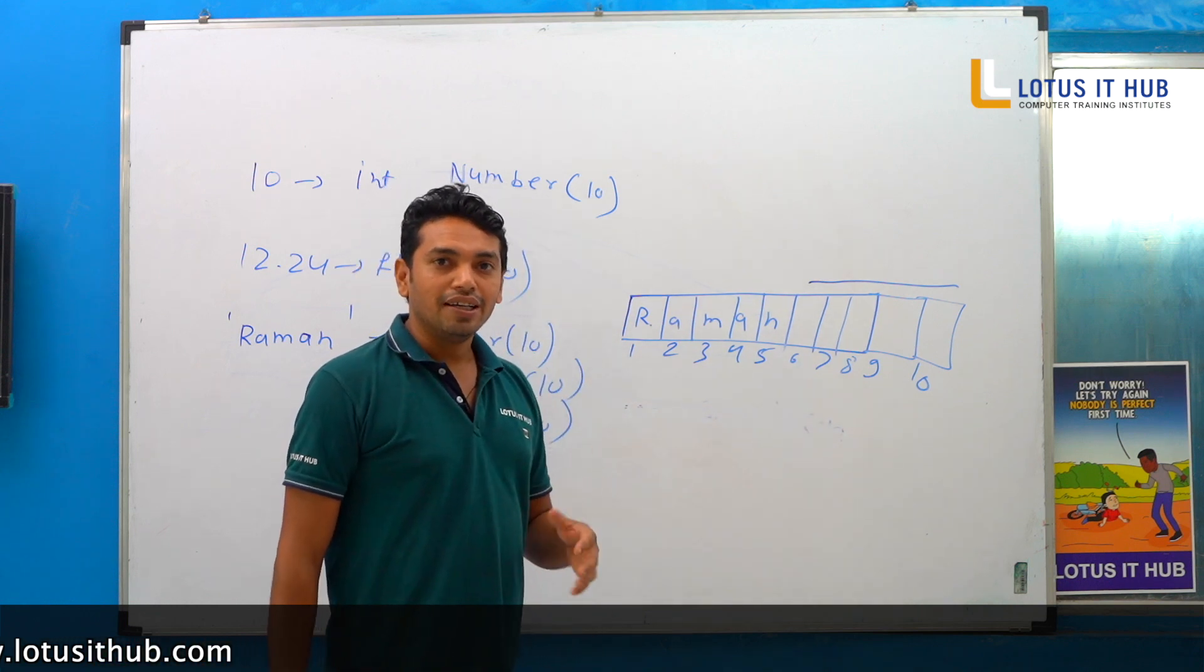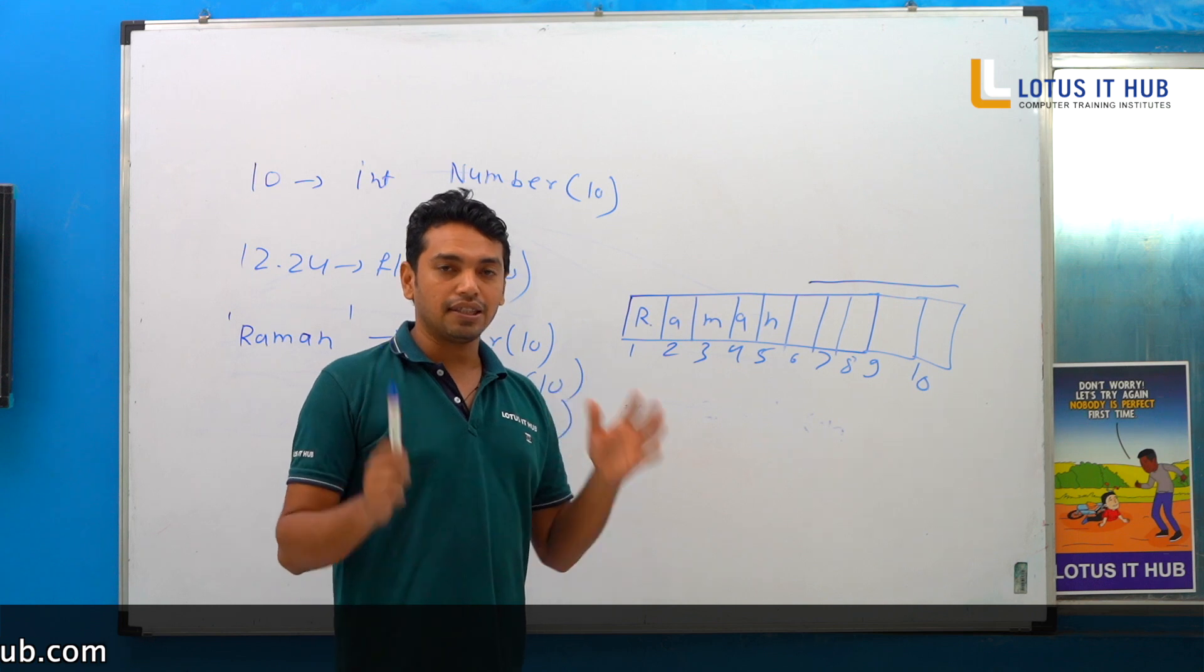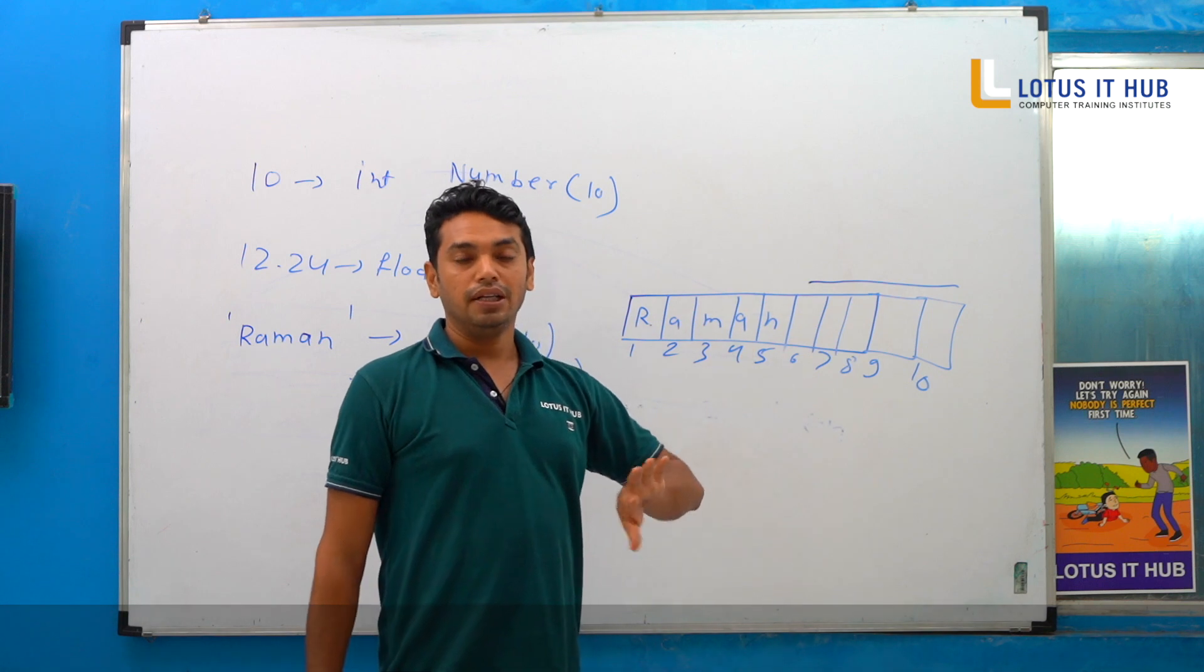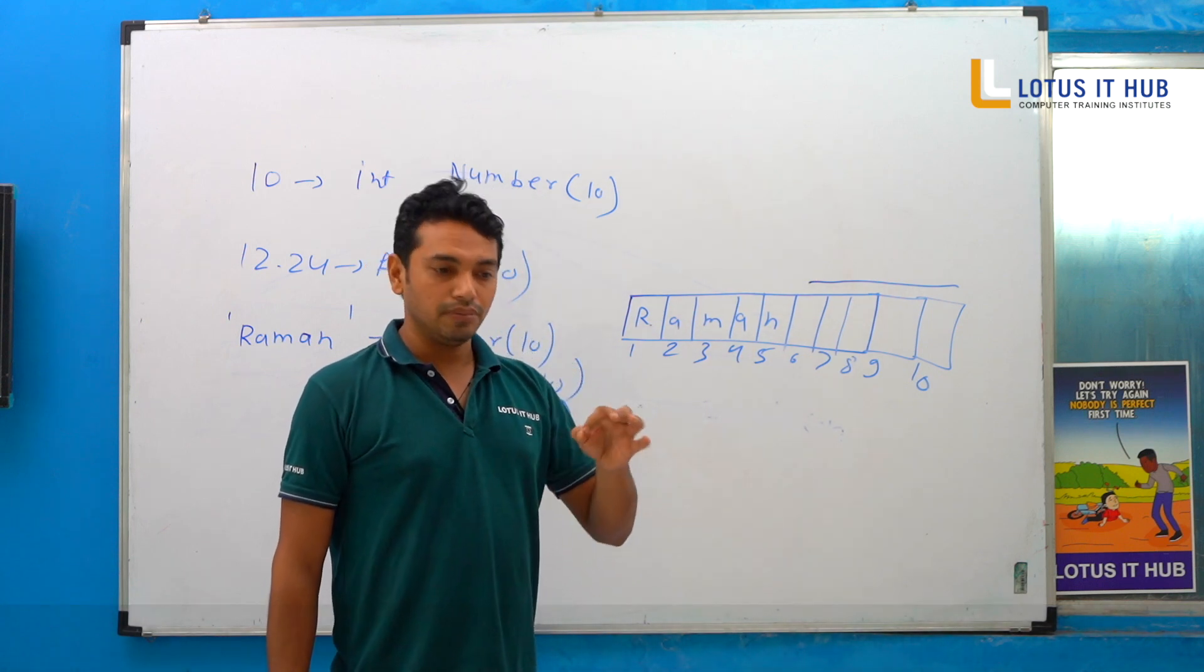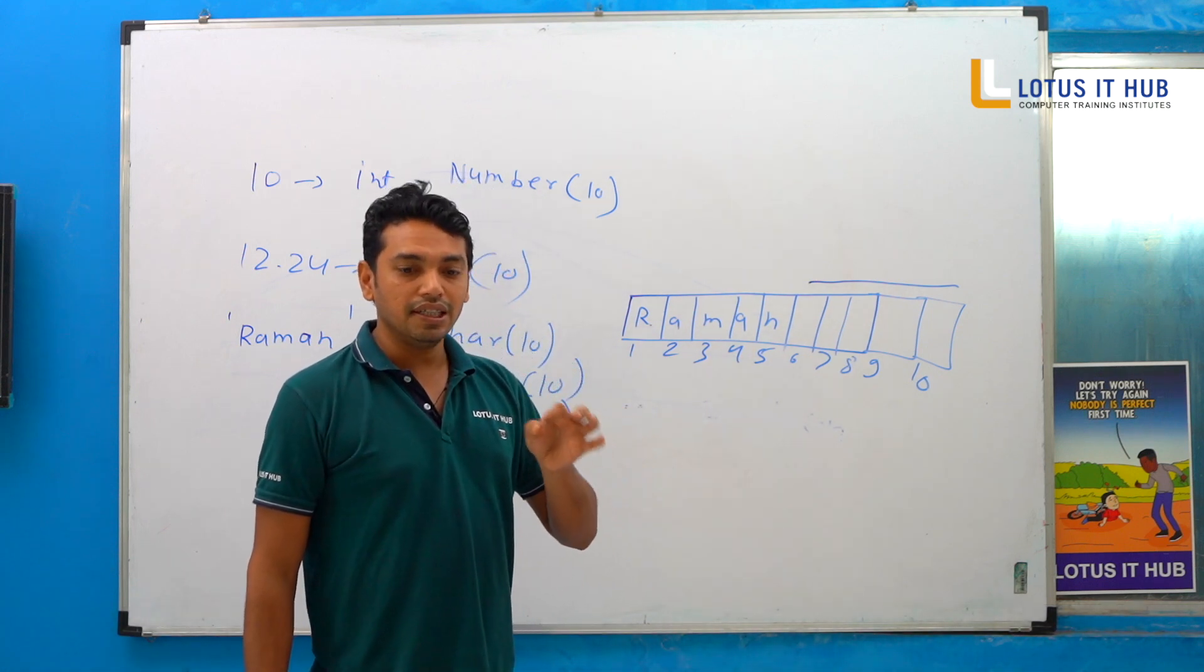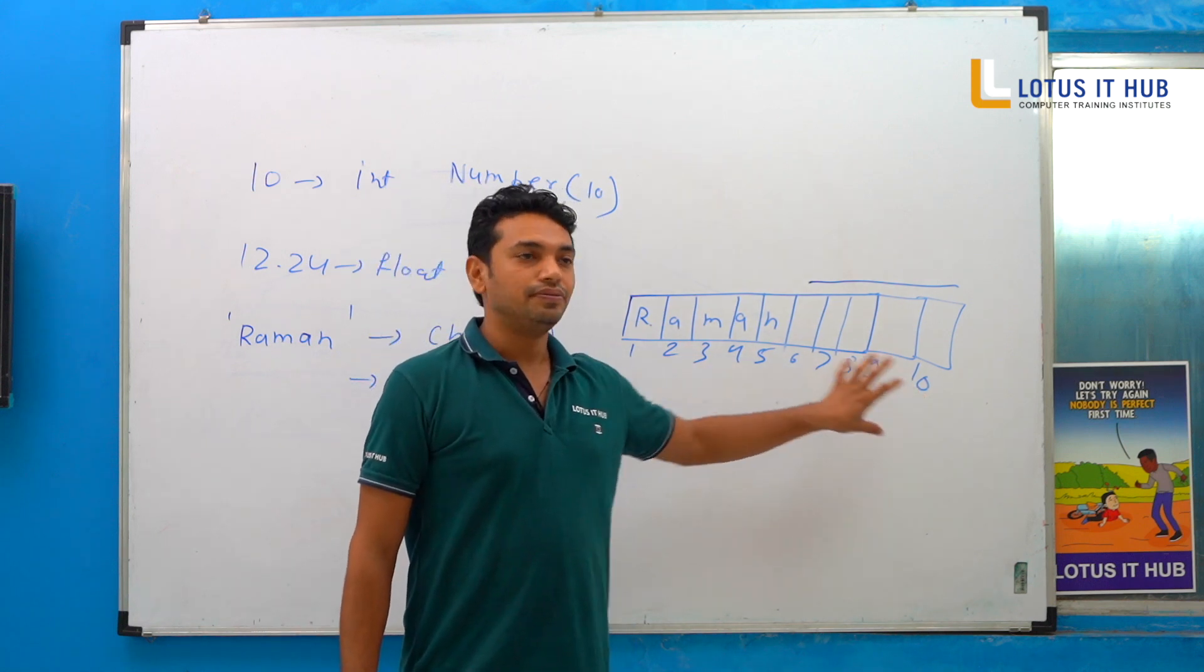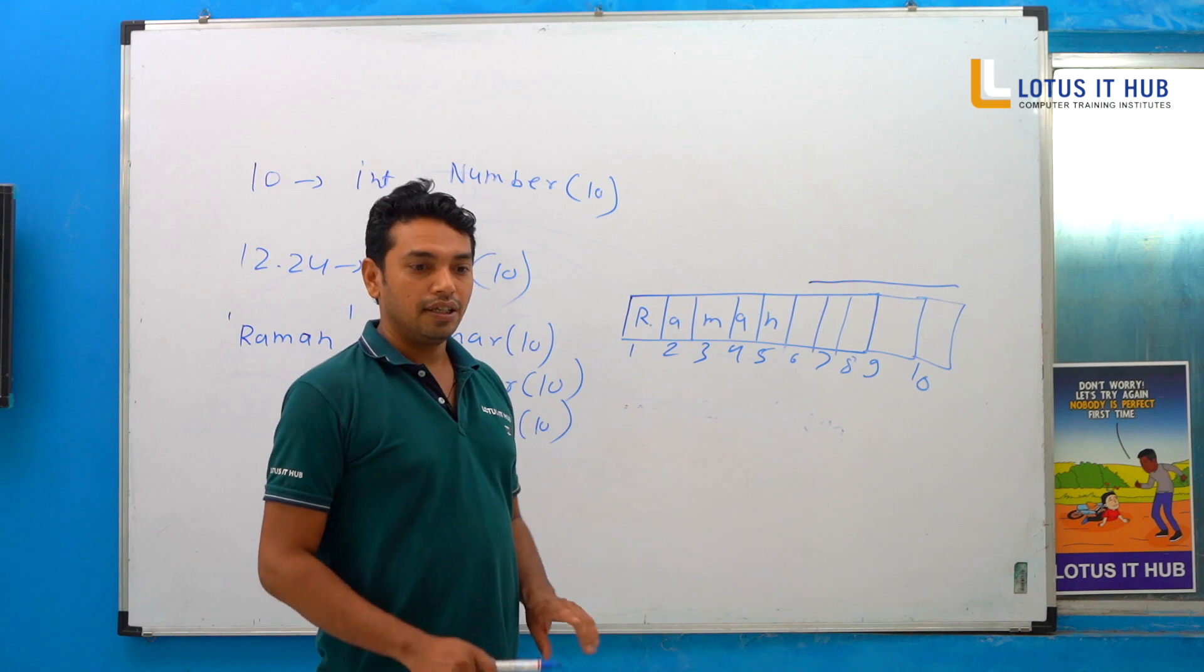Whenever we come to CHAR, it's counting entire size of block. What is the size of this thing? 10. It's occupied 10, even if data is Ram, Sam, David, Niles, anything. It takes 10 only. So that is the thing.